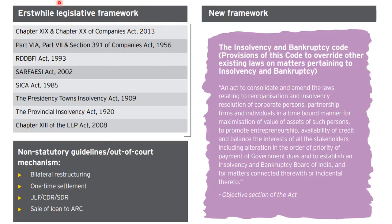The existing legislative framework comprised different laws and mechanisms to regulate insolvency proceedings. Now there is a new framework in the form of the Insolvency and Bankruptcy Code, whose provisions override all other existing laws on matters pertaining to insolvency and bankruptcy. The objective section of the act states it is an act to consolidate and amend the laws relating to reorganization and insolvency resolution of corporate persons, partnership firms, and individuals in a time-bound manner, for maximizing the value of assets, promoting entrepreneurship, availability of credit, and balancing the interests of all stakeholders, and to establish an Insolvency and Bankruptcy Board of India.